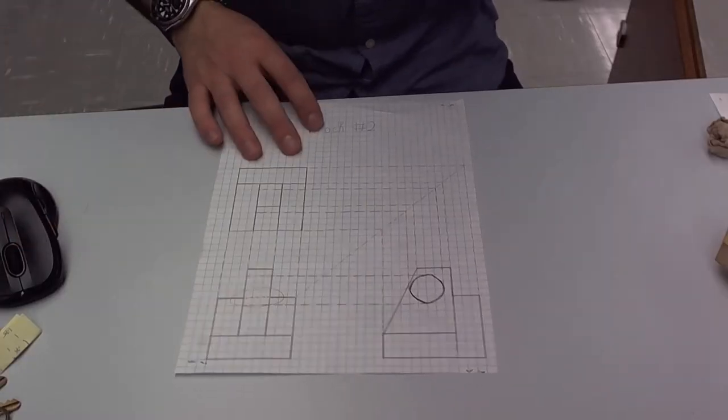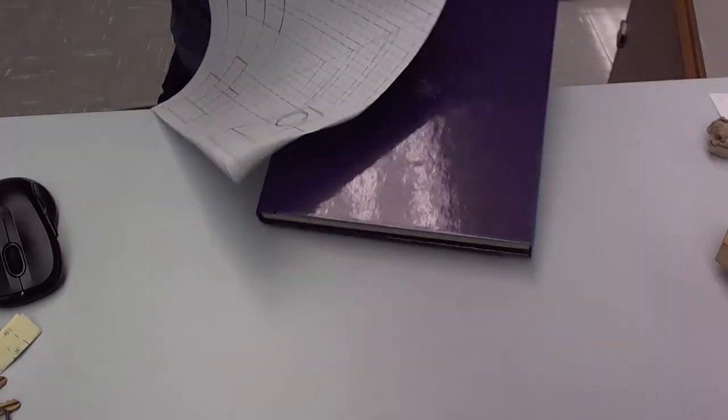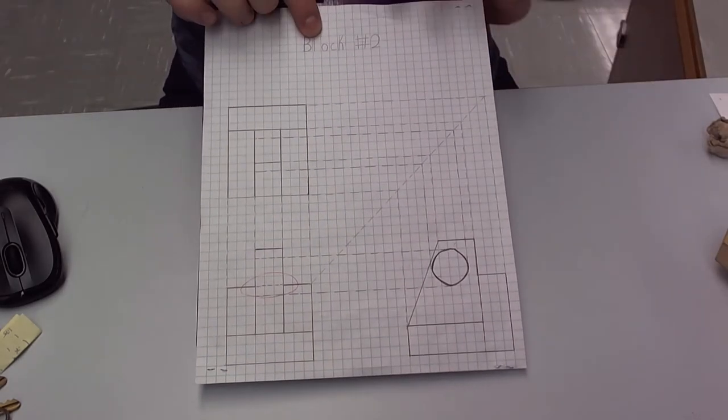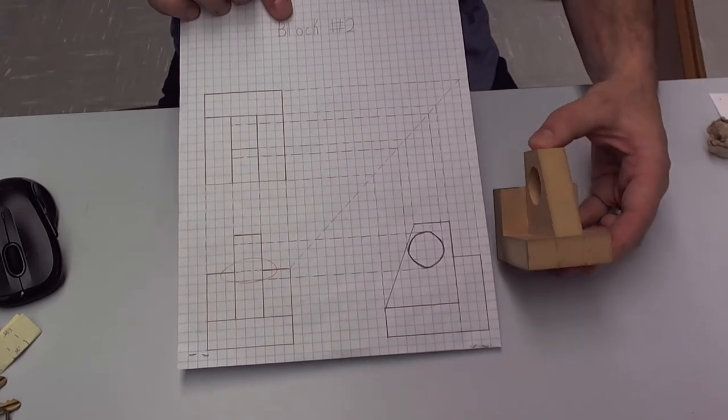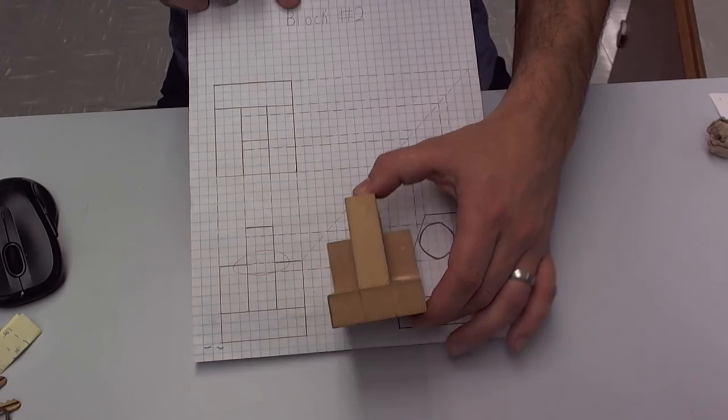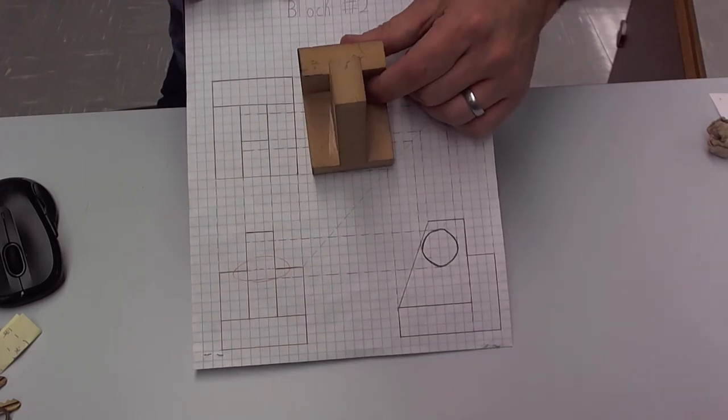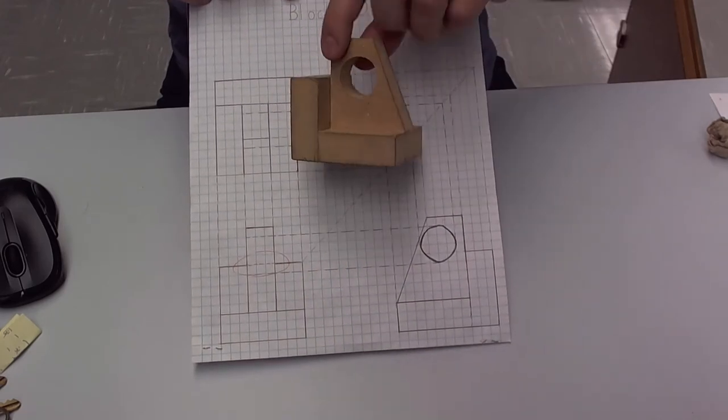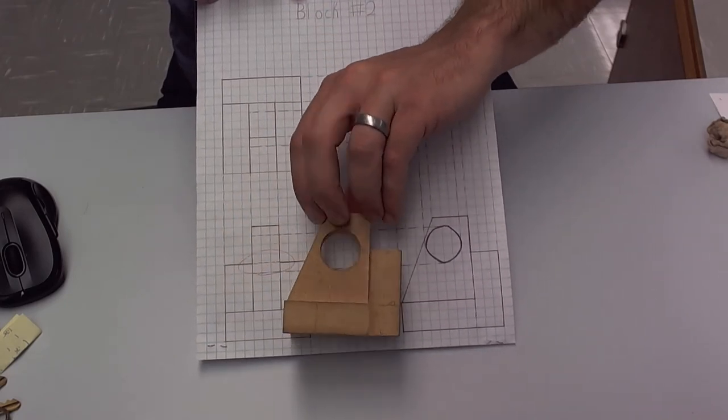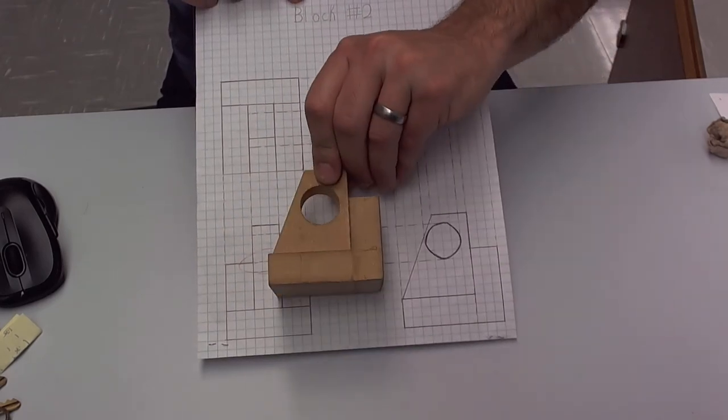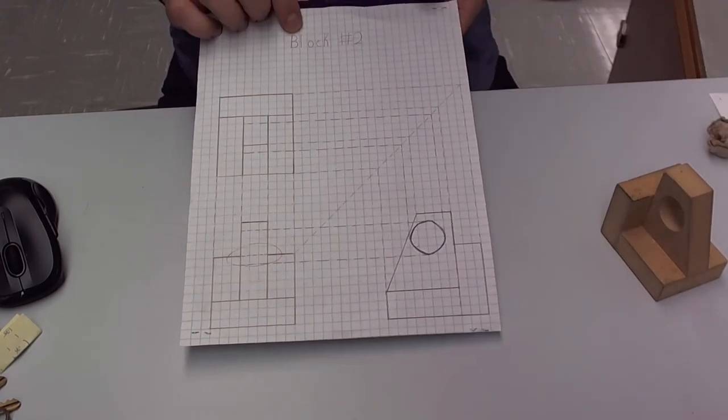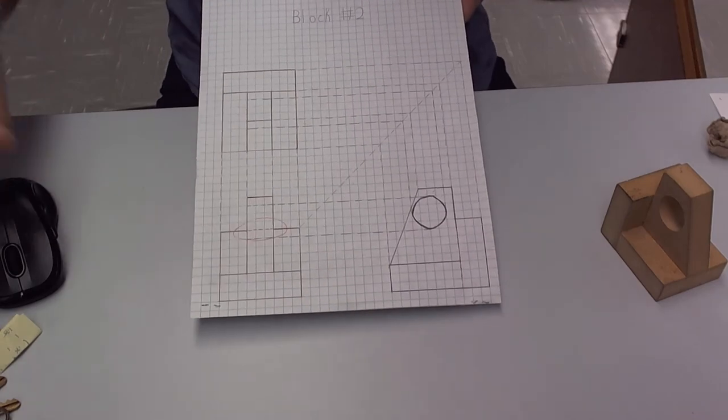And then lastly, for those of you who want to know what this is, it looks like just a bunch of lines, this is actually called an orthographic drawing. So you have an object. You're looking at it from the front, looking at it from the top, looking at it from the side right there. So you're getting three different views of one object on one picture and we'll be going over this the next couple of days.